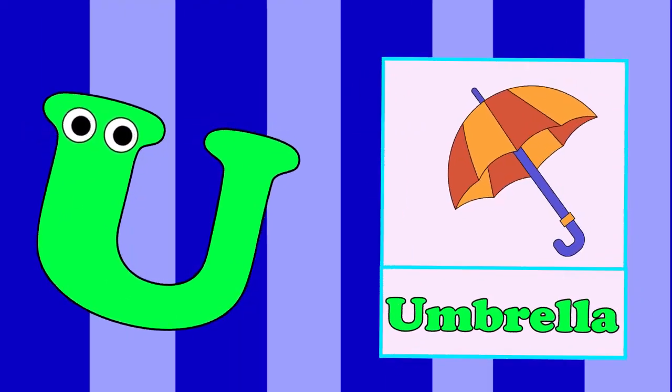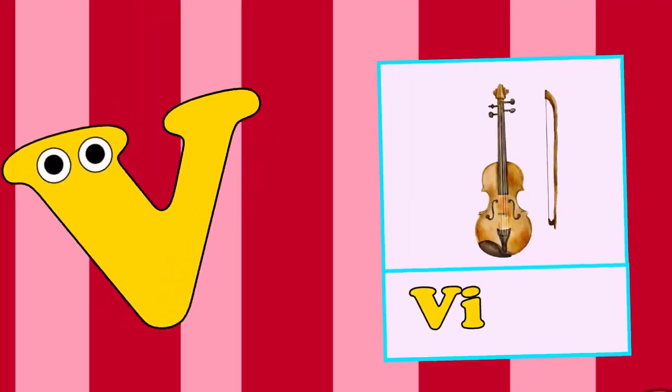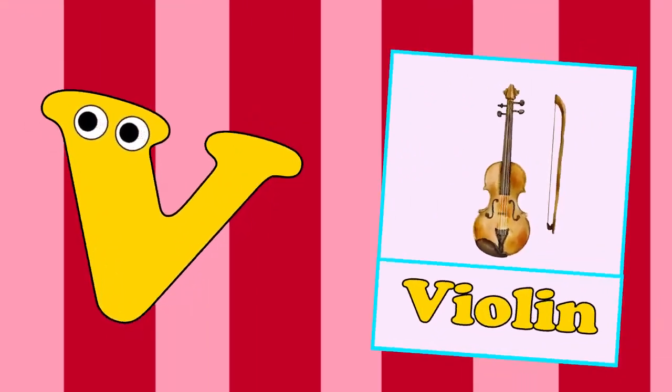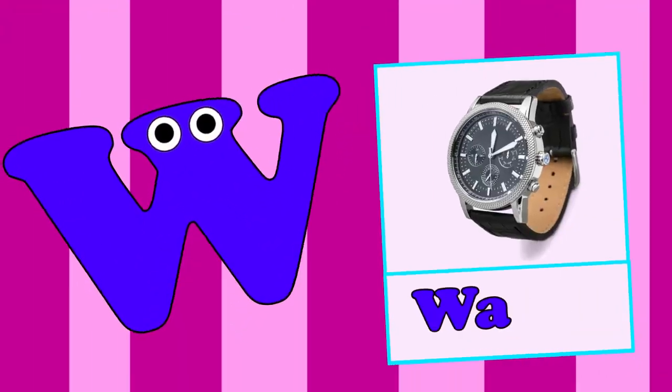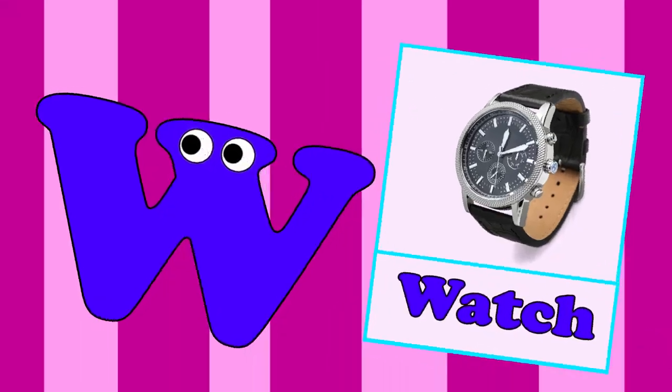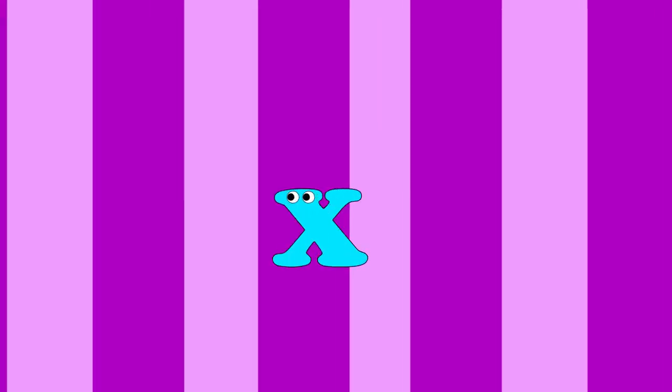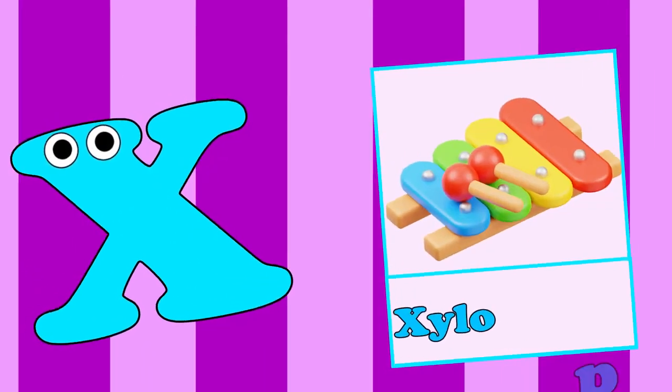U is for Umbrella. Uh, Uh. Umbrella. V is for Violin. V, V. Violin. W is for Watch. W, W. Watch.